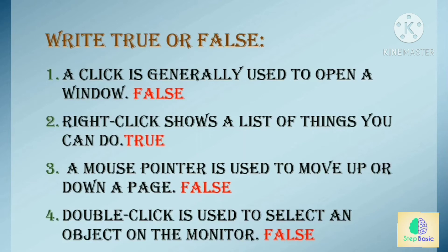A mouse pointer is used to move up or down a page — this statement is false, because a mouse pointer is used to point things on a computer when we use a mouse. Double clicking is used to select an object on the monitor — this statement is false, because double clicking is generally used to open a window on the computer.